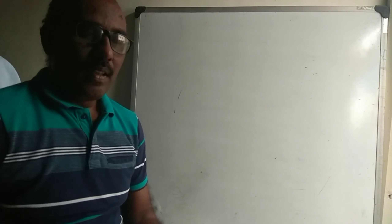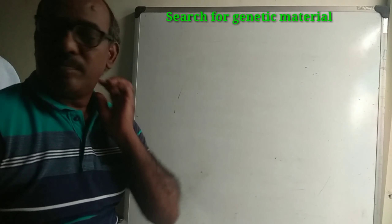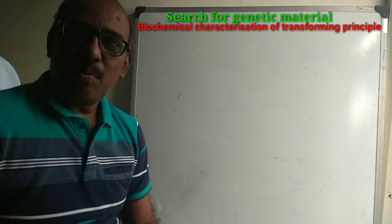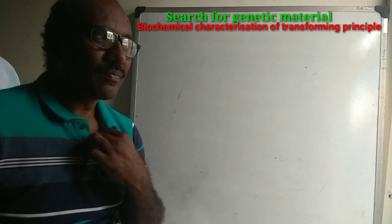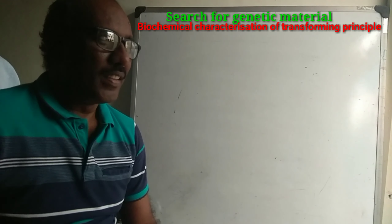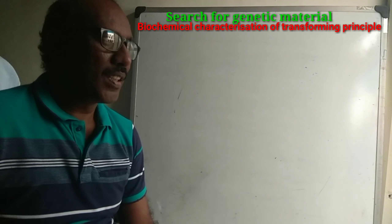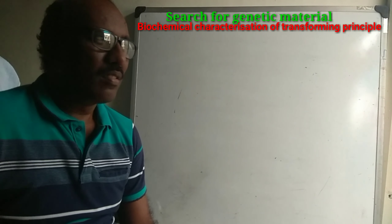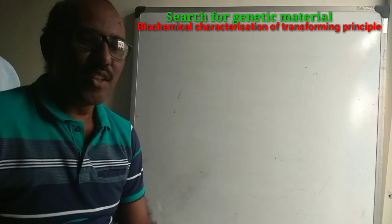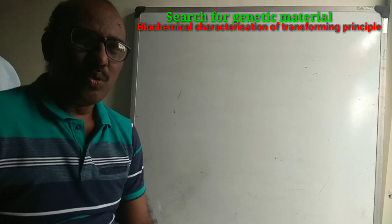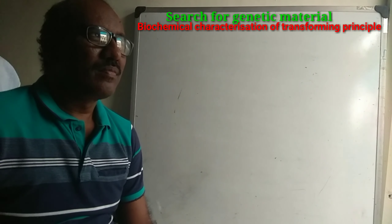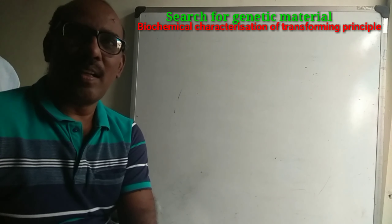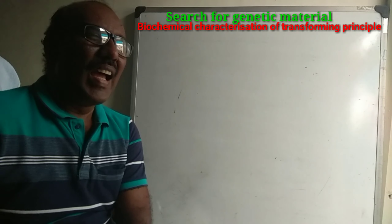Hello friends. In the last video we talked about the discovery of the genetic material and discussed the Griffith experiment. Today we are going to discuss the latter discovery after the Griffith experiment, because in the Griffith experiment it was not concluded what is responsible for the transformation of the R strain into S strain — some proteins in the cells were thought to be responsible.